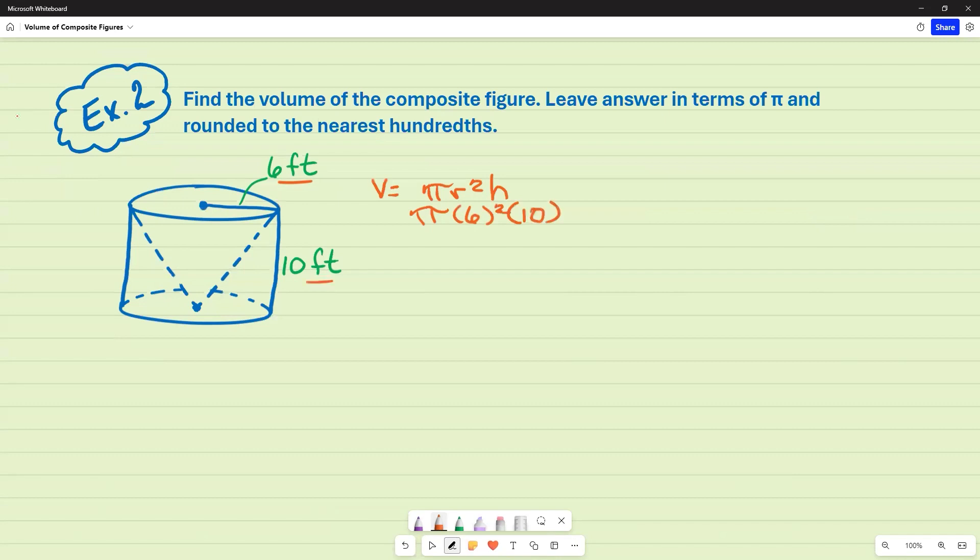Go ahead and put that in the calculator. And so for our cylinder, the volume is going to be 360 pi. I'm just going to leave it there for now. And like I said, once I get to the end, that's when I will actually follow these directions.